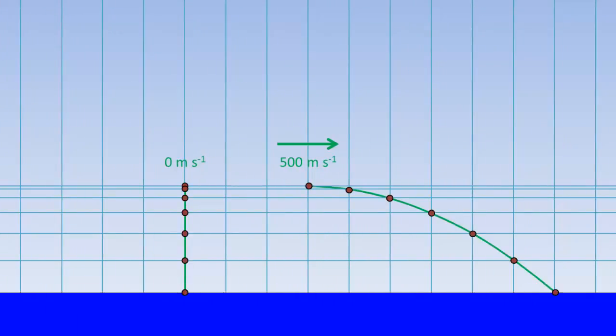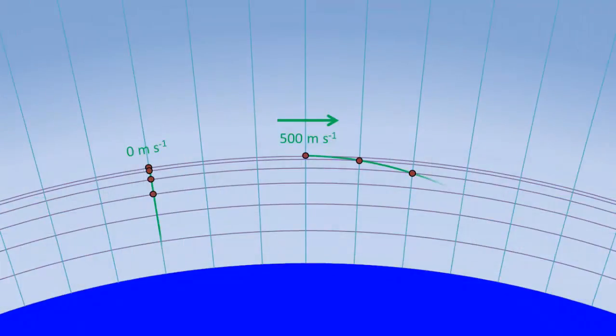If the earth is flat, the time taken should be the same. But the earth is round, and the ground is curving away from the stone. So the projected stone actually takes a slightly longer time to land, compared to the one that's dropped.